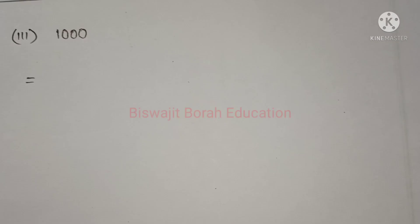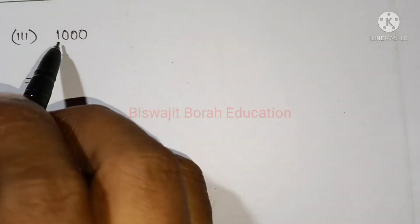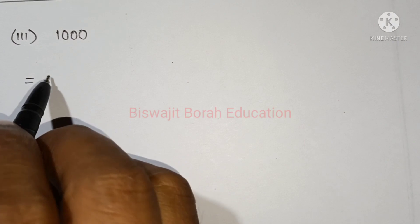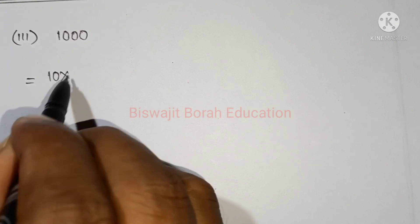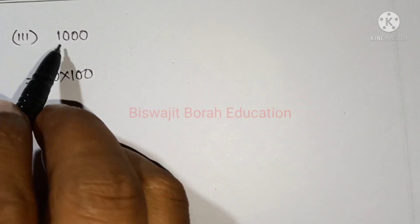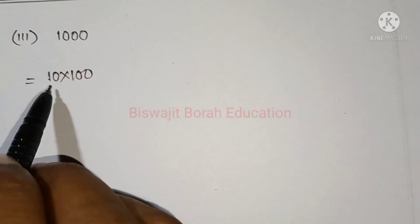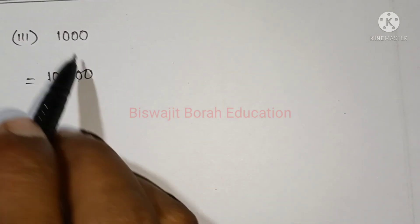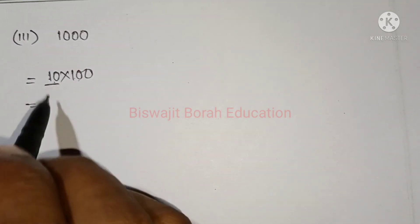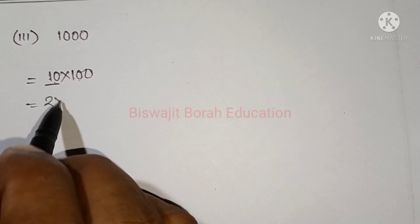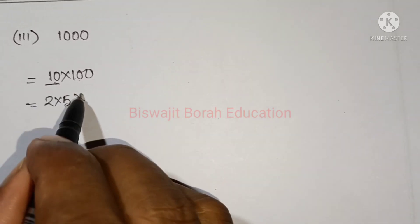So, we do 1,000. We do 2 times 1,000. So, 2 times 1,000 is equal to 5. We do 2 times 1,000.